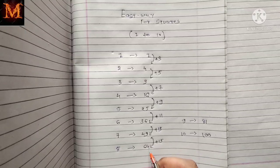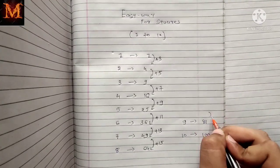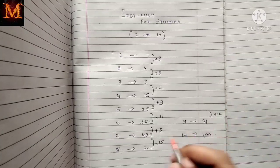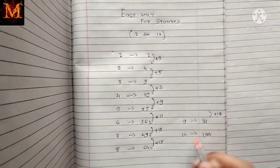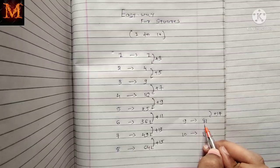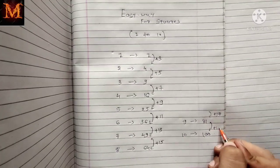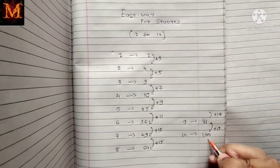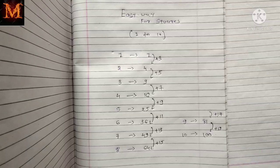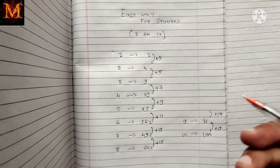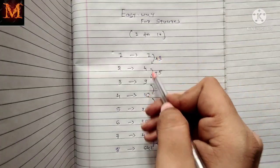Now add another 2 to get plus 15. So 49 plus 15 is 64. Then add another 2 to get plus 17. So 64 plus 17 is 81. Now add another 2 to get plus 19. So 81 plus 19 is 100. This way you can remember the squares.